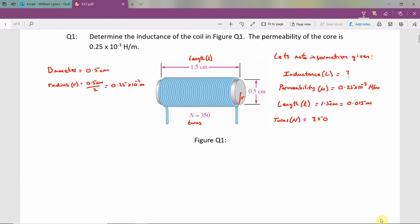Now that we have calculated the radius, it's possible to calculate the area using pi r squared. So that's equal to pi times 0.25 multiplied by 10 to the power minus 2 meters squared. This gives us an answer of 1.96 multiplied by 10 to the power minus 5 meters squared.